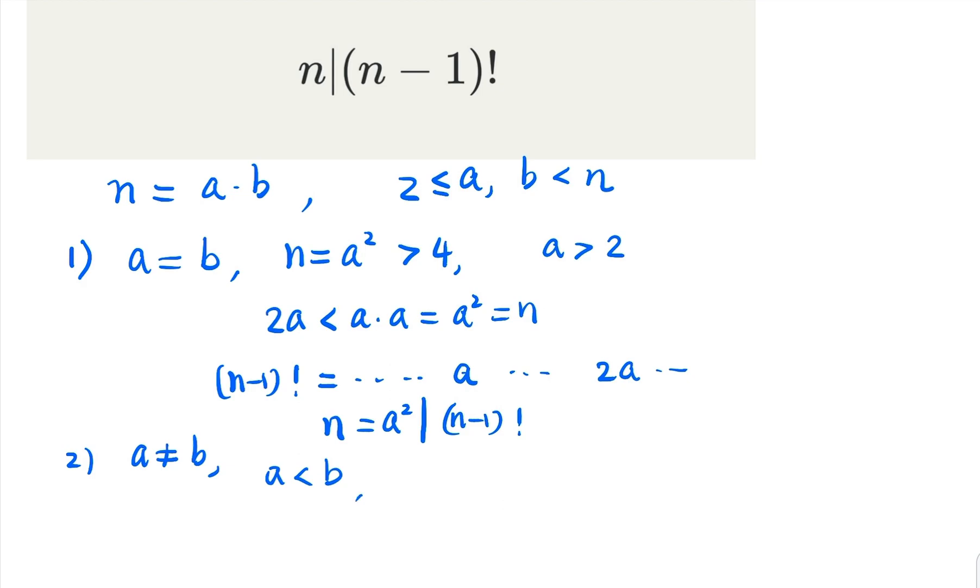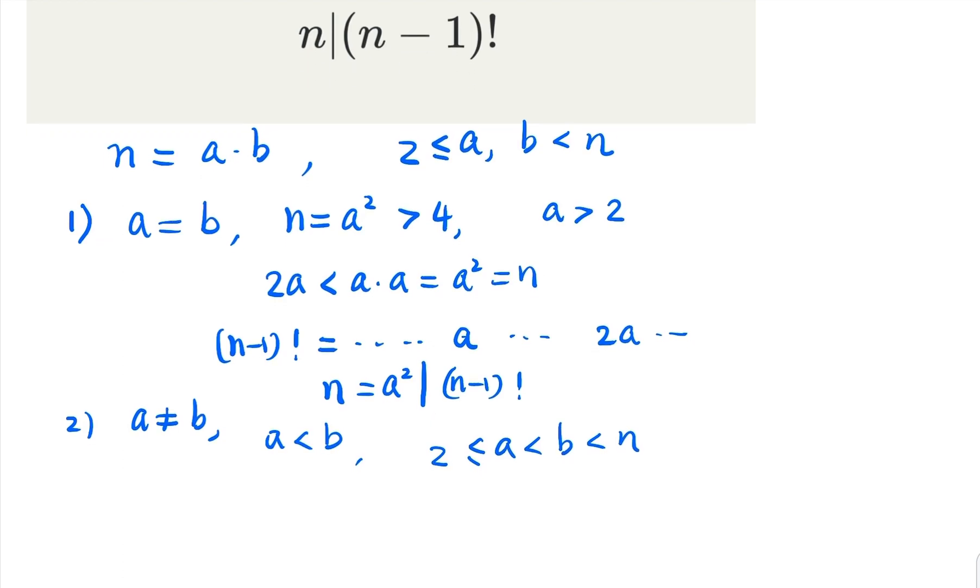So in this case it is easy. Both a and b are less than n and greater or equal to 2. So which means (n-1) factorial again, which is the product of 1, 2, up to integer n-1, has to contain a and contains a different number, which is b.